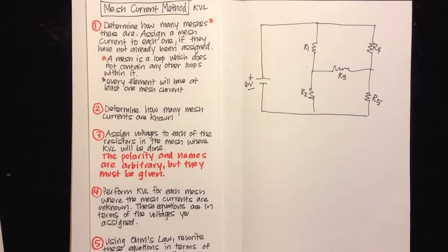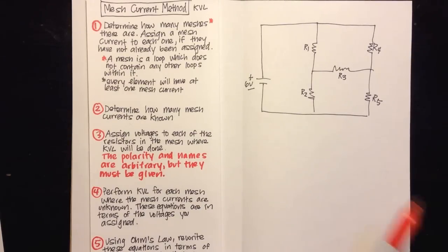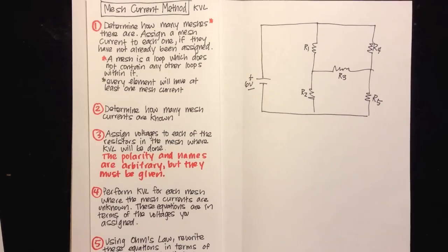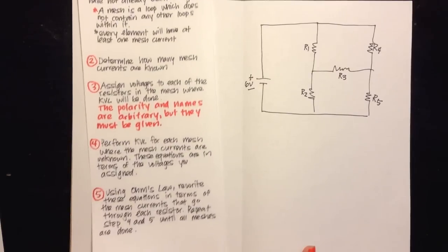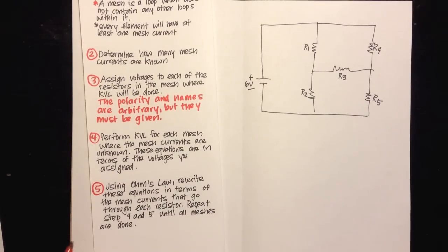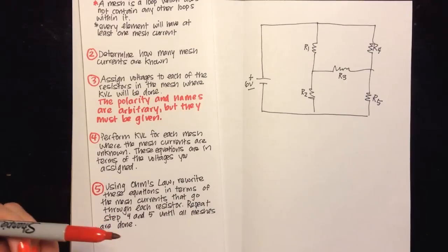Step two is to determine how many mesh currents are known, if any. Step three, assign voltages to each of the resistors in the mesh where KVL will be done. The polarity and names are arbitrary, but they must be given for this method. Step four, perform KVL for each mesh where the mesh currents are unknown — these equations are in terms of the voltages you assigned in step three. Step five, using Ohm's law, rewrite these equations in terms of the mesh currents that go through each resistor. Repeat steps four and five until all the meshes are done.